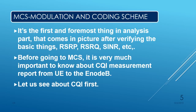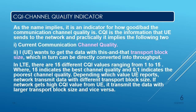MCS stands for Modulation and Coding Scheme. Before going to MCS we need to know about CQI. CQI stands for Channel Quality Index or Indicator. As the name implies, it is an indicator of how good or bad the communication channel quality is. The mobile equipment, that is the user equipment, sends this CQI information to the network. The purpose is to tell about two things: current channel quality and the transport block size that the user equipment can receive.